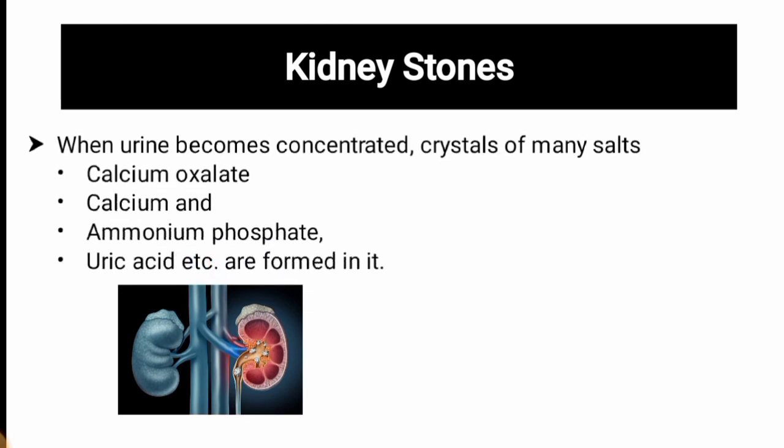When urine becomes concentrated, crystals of salts form. For example, sodium chloride, calcium, and other salts — some examples include calcium oxalate, calcium phosphate, and ammonium phosphate. Uric acid is also a solid form that contributes to kidney stone formation.